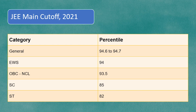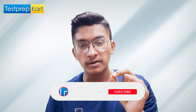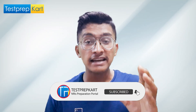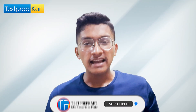Apart from this, if you want admission in at least any NIT in any lower branch, for General category around 94.6 to 94.7 percentile is required. For EWS it will be around 94, for OBC around 93.5, for SC around 85 percentile, and for ST around 82 percentile. This is the minimum percentile you require to get admission in at least any NIT in the country.